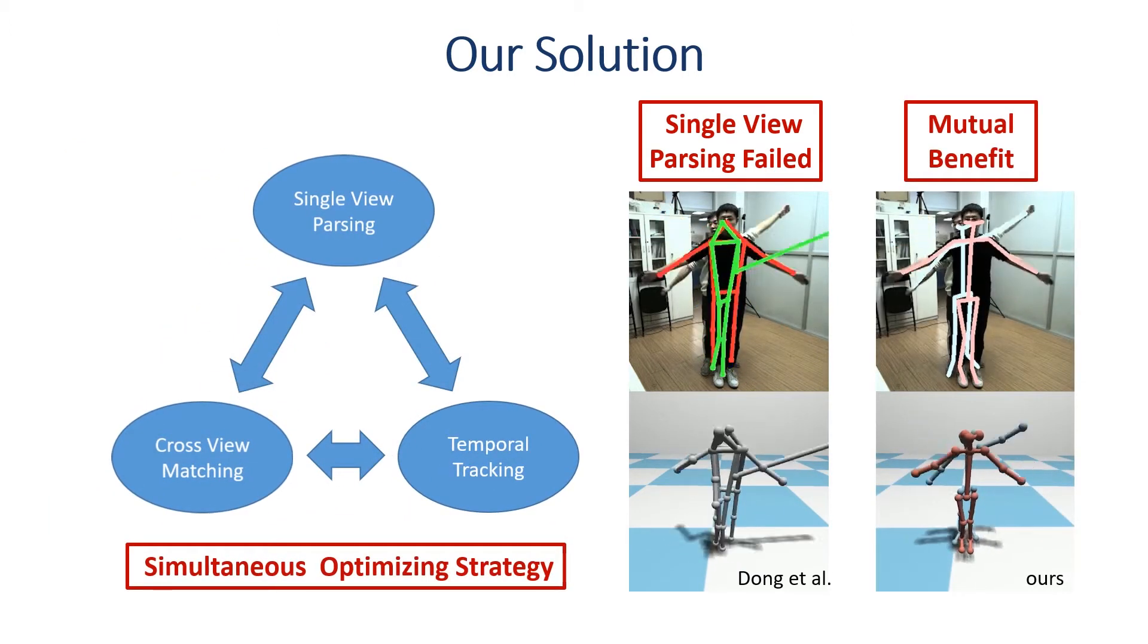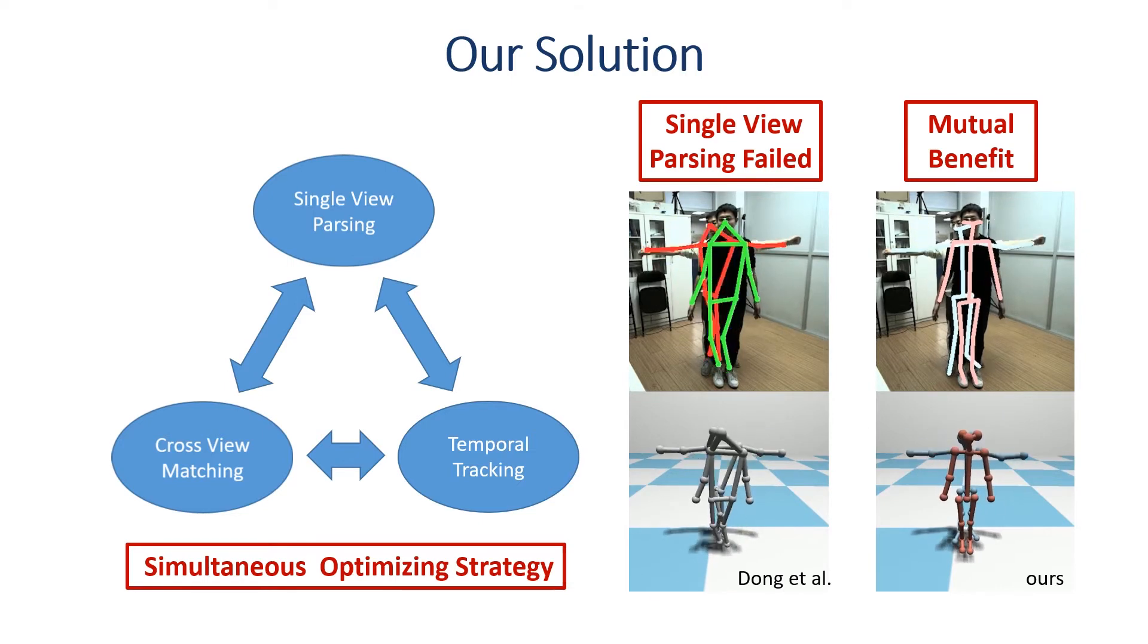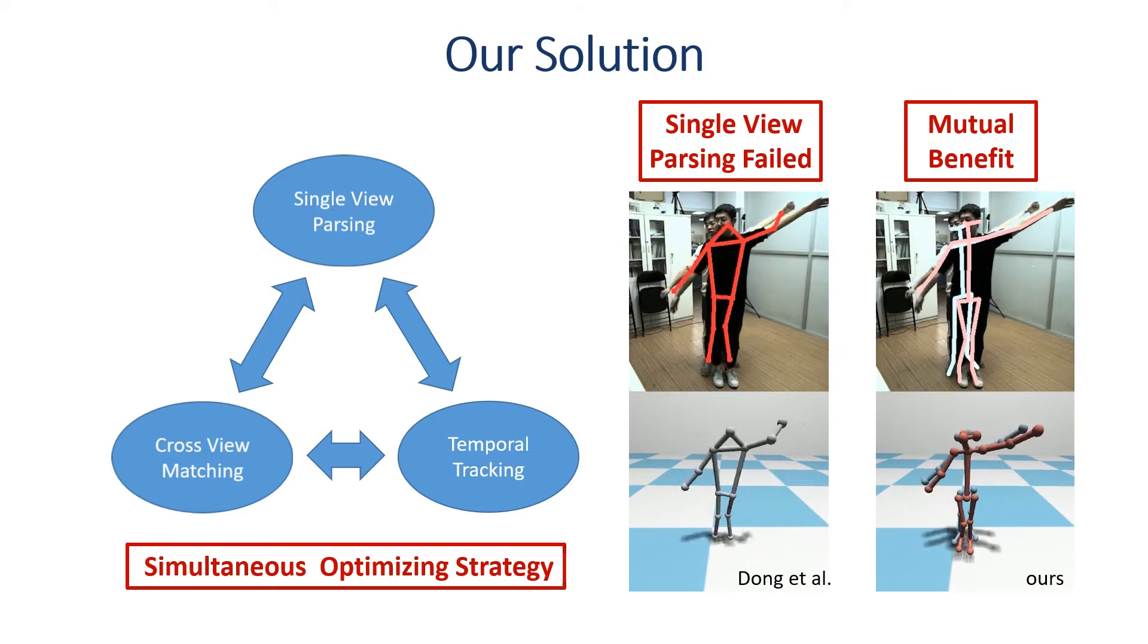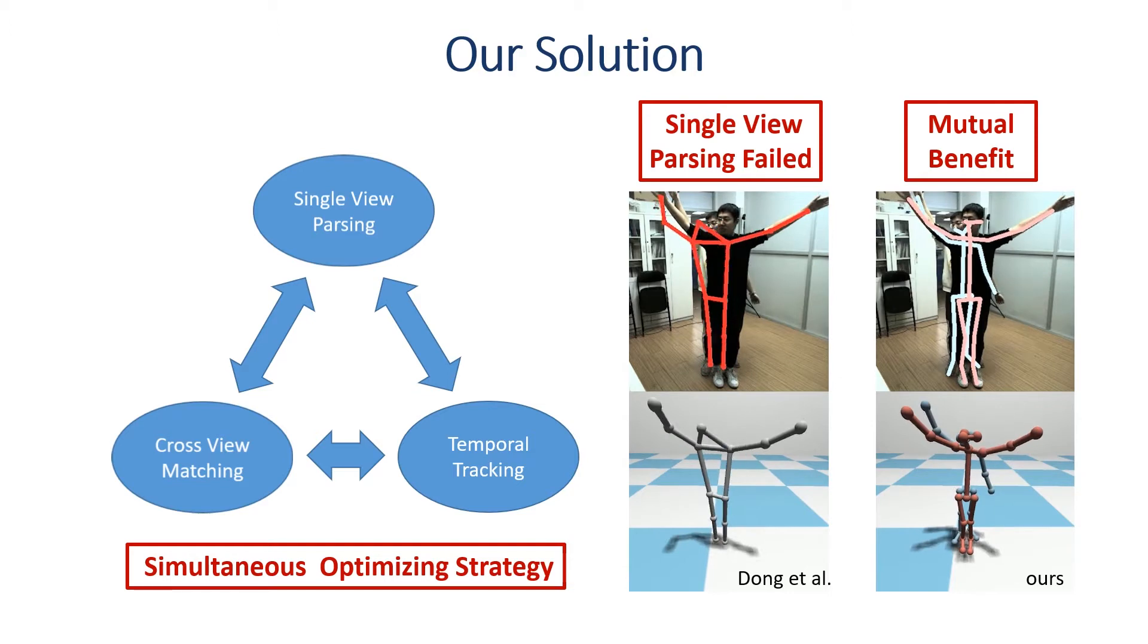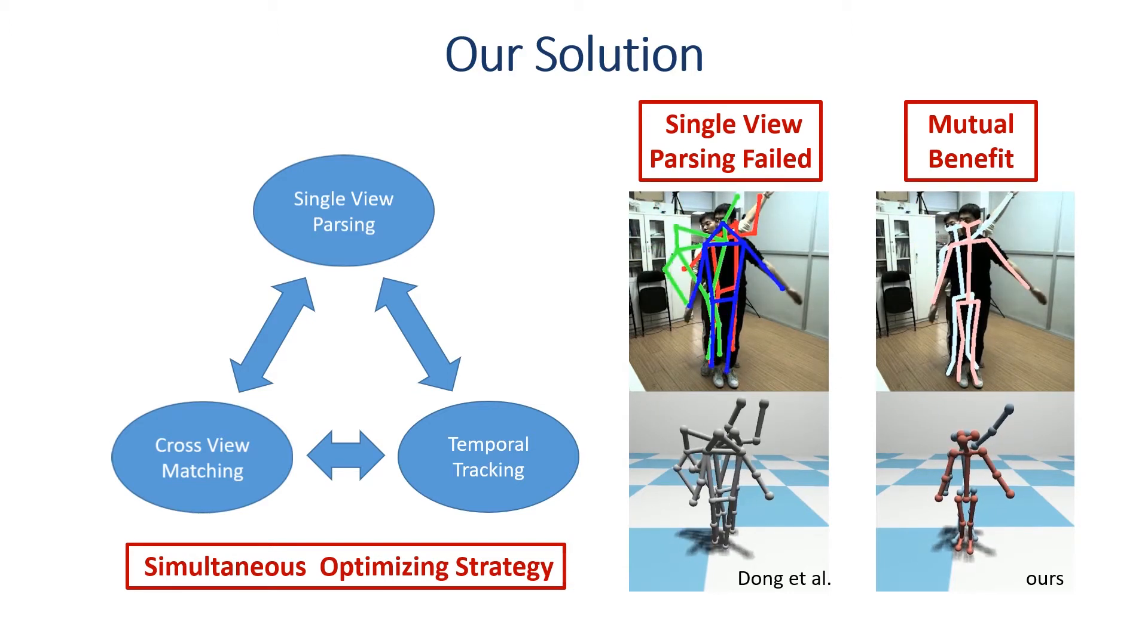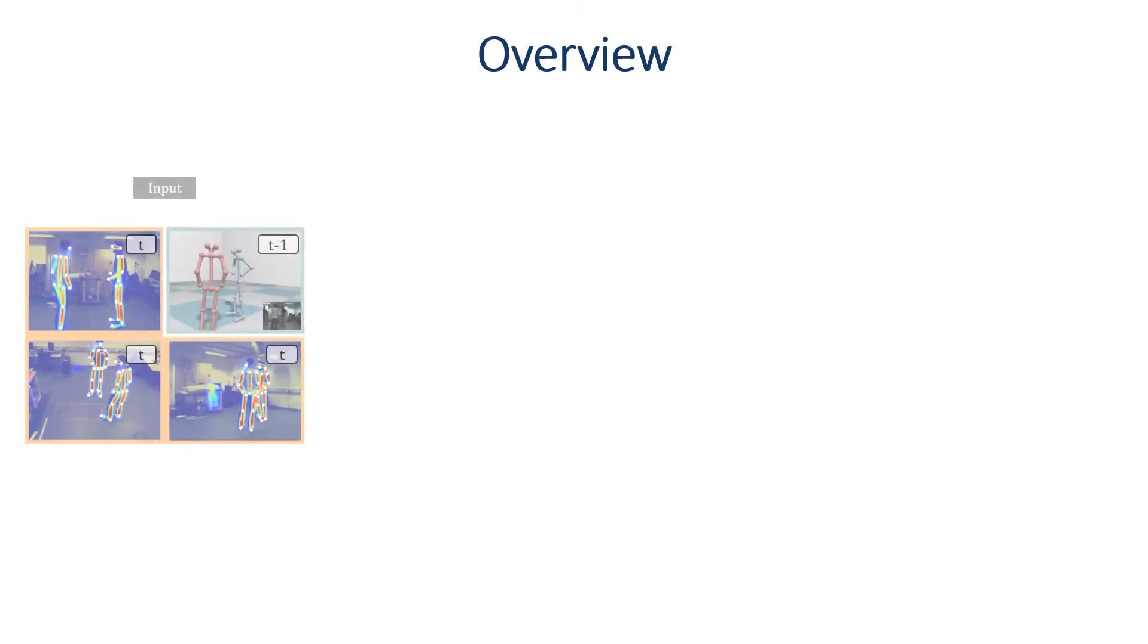In this paper, we formulate parsing, matching and tracking in a unified graph optimization framework called 4D association graph to simultaneously and equally address these information to benefit each other. The pipeline of our system includes 4 parts.